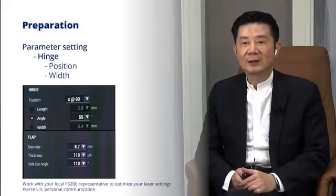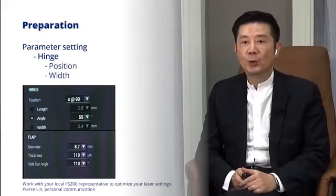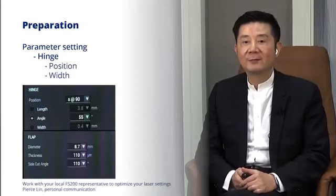Side cut angle is set to be 75 degrees in default. But I'd like to set inverted angle greater than 90 degrees, for example, 110 degrees, which is easier to reposition the flap and better fitting in the flap gutters.